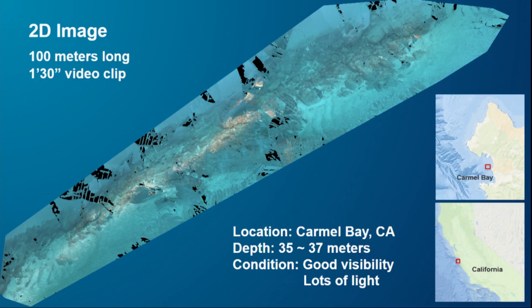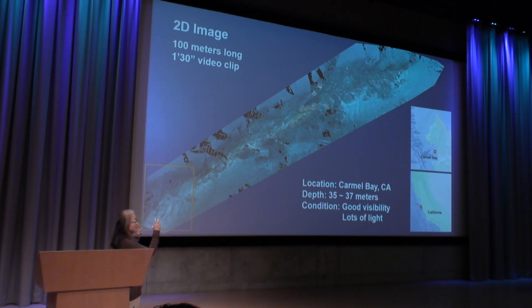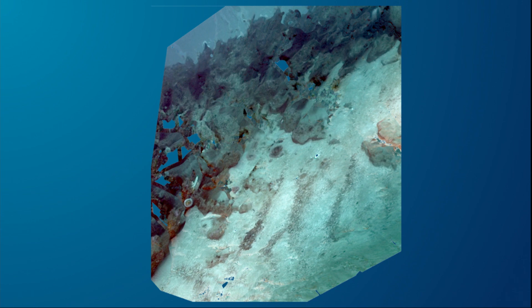After running the software, here's my best image — a 2D orthomosaic from the video. Tip to tip it covers about 100 meters, created from a one-minute-and-30-second video clip taken in Carmel Bay, California, on a very good day at about 35 to 37 meters depth with great visibility and lots of light. Because this is a map, you can bring it into ArcGIS or ArcMap and do any analysis — measure things, whatever you want. This is not just a photo; it's a georeferenced map. And when you blow it up, you can see anemones, ripples in the sand, and even individual sand grains — all within your map.